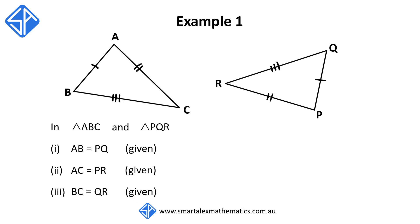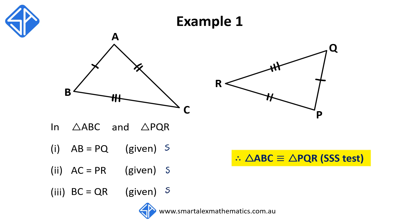So what we have here is we've shown that we have a side equal, another side that's equal, and another side. Therefore, we can make the conclusion that triangle ABC is congruent to triangle PQR, using the SSS test. Note that this symbol with three horizontal lines stands for 'is congruent to'.